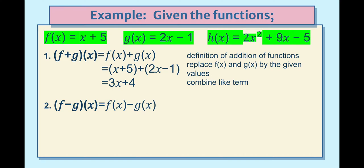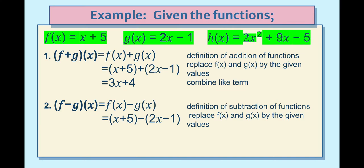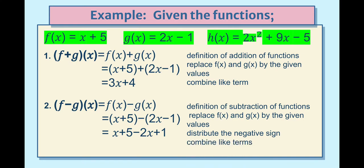For subtraction, (f − g)(x) = f(x) − g(x) by definition. Replace with values: (x + 5) − (2x − 1). Distribute the negative sign: x + 5 − 2x + 1. Combine like terms: x − 2x = −x, and 5 + 1 = 6. So the difference is −x + 6. And the sum was 3x + 4.